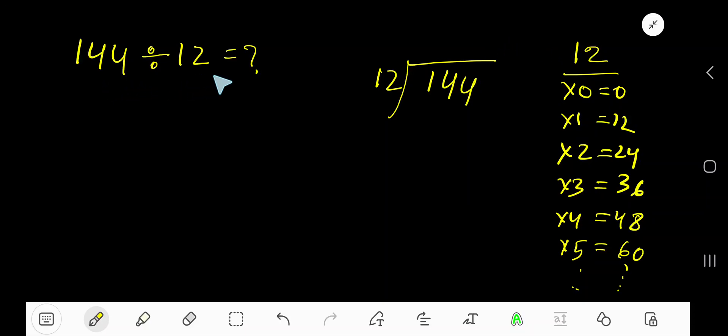144 divided by 12. Here 12 is the divisor, so we need the multiplication table of 12. 12 times 0 is 0, 12 times 1 is 12, 12 times 2 is 24, 12 times 3 is 36, 12 times 4 is 48.